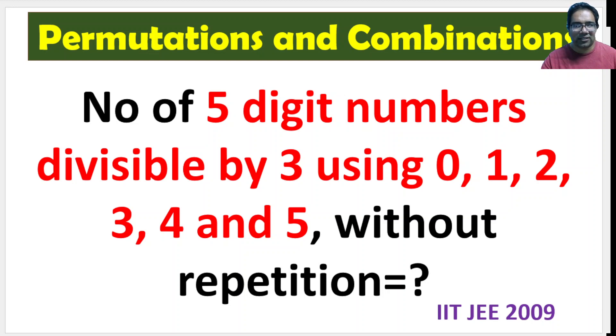Hi friends, we have to create 5 digit numbers divisible by 3 using 0, 1, 2, 3, 4, and 5. We have 6 digits: 0, 1, 2, 3, 4, 5. We have to create 5 digit numbers but they should be divisible by 3. Repetition is not allowed.